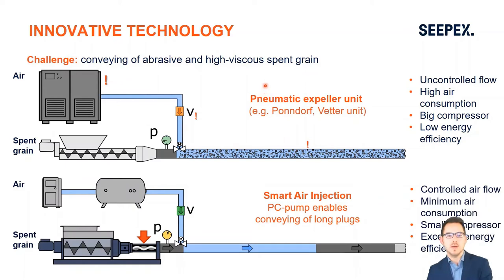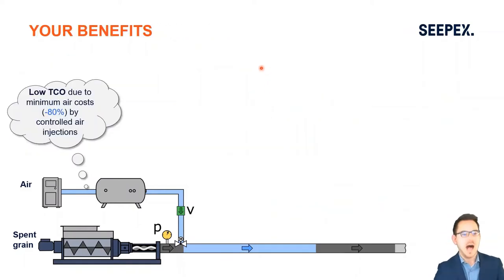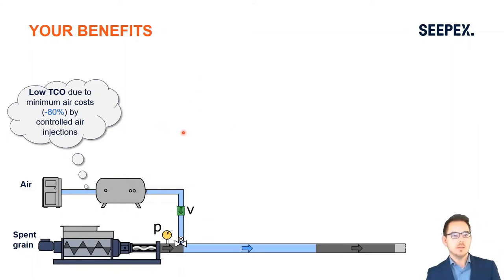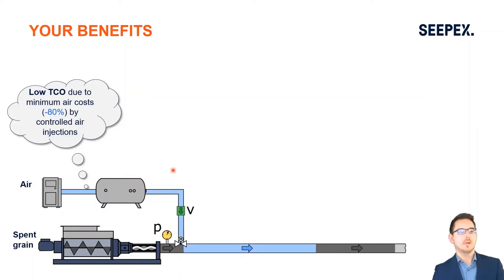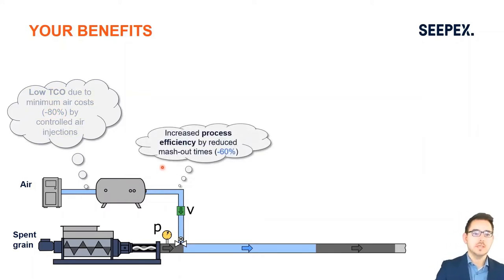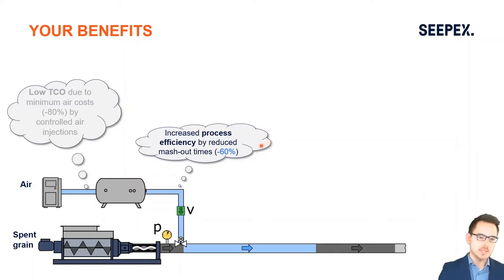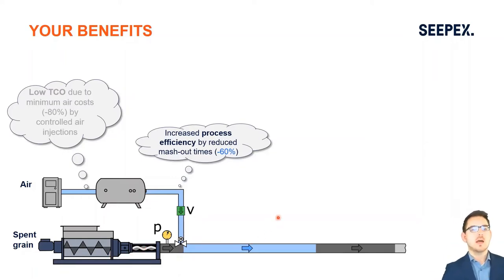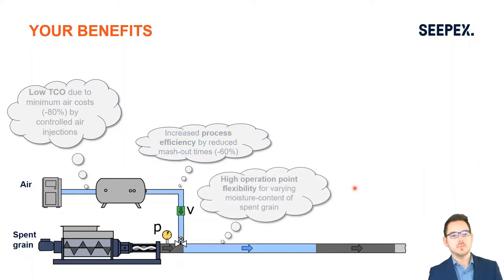The benefit of this system is a highly significant reduction in total cost of ownership, especially energy costs for air. Validation studies have achieved up to 80% reduction in air consumption, which directly reduces energy costs. We can also increase process efficiency by reducing mash-out times — in some applications reduced from 55 minutes down to 22 minutes — by exchanging the screw conveyor of an expeller unit with a progressive cavity pump, which runs consistently regardless of varying operation points.